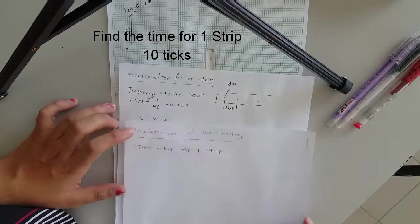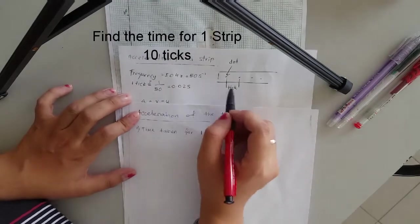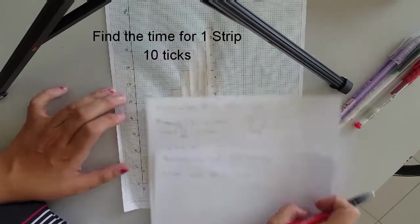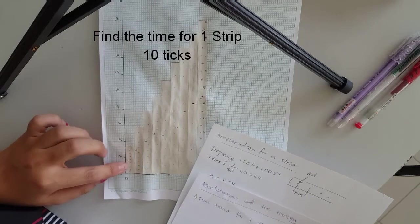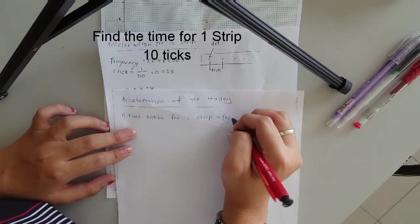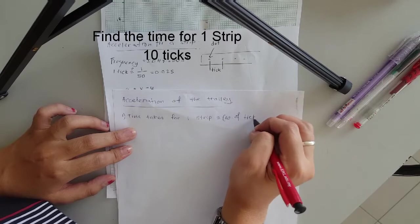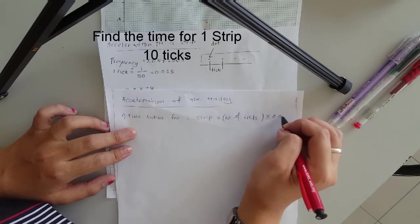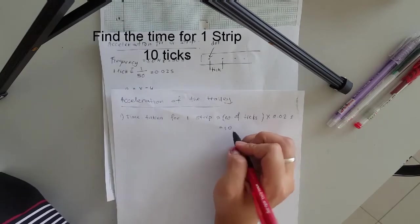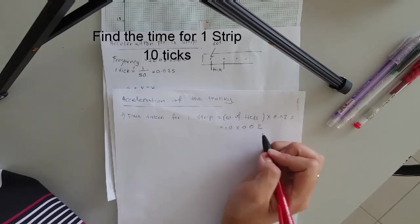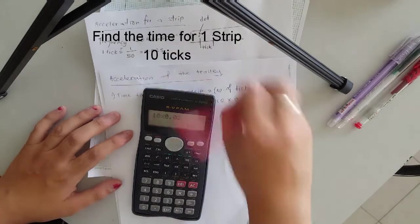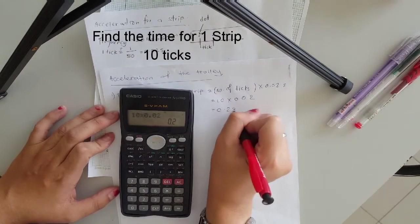Because previously we know that time taken for one tick is actually 0.02 seconds. So but because we have each of these strips have 10 ticks. So time taken for one strip is formula number of 6 times 0.02 seconds. So we have 10 ticks multiplied by 0.02. So 10 times 0.02. I guess 0.02 seconds.